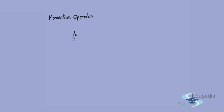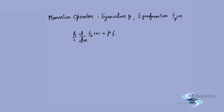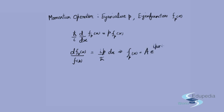Next, let's look at eigenvalues and eigenfunctions of the momentum operator. In one dimension, the momentum operator is (ℏ/i)(d/dx). Assuming eigenvalue p and eigenfunction f_p(x), the eigenvalue equation is (ℏ/i)(d/dx) f_p(x) = p · f_p(x). Separating variables gives df_p / f_p = (ip/ℏ) dx, so f_p(x) = A · e^(ipx/ℏ), where p is the eigenvalue.